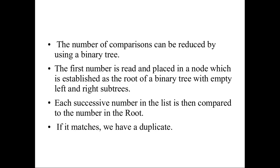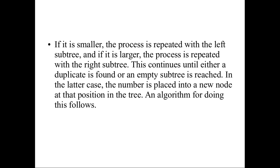The first number is read and placed in a node as the root node of the binary tree, with the left and right subtrees empty. Each successive number is then compared with the root node. If it matches, it is declared a duplicate. If it is smaller, it is placed in the left subtree; if it is larger, it is placed in the right subtree. This continues until a duplicate is found or an empty subtree is reached.